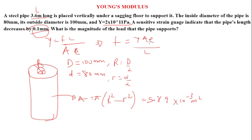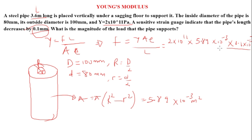Substituting into the formula: Young's modulus is 2×10¹¹, area is 5.89×10⁻³, extension is 0.1×10⁻³ m, and the original length is 3.6 m. Go ahead and calculate the final force and put your answer in the comment section — let's see what you get.